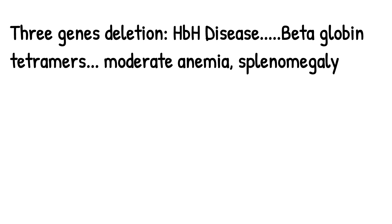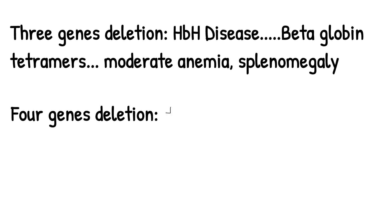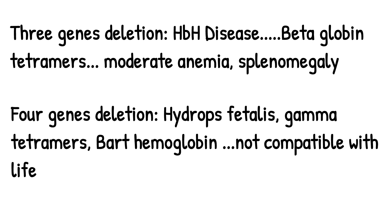Three gene deletion is called Hemoglobin H disease. There is formation of beta globin tetramers and the patient may have moderate anemia and splenomegaly. Four gene deletion leads to hydrops fetalis — gamma chain tetramers form, also called Bart's hemoglobin.